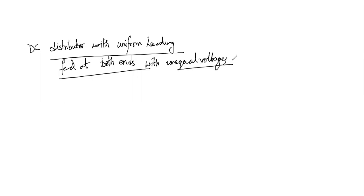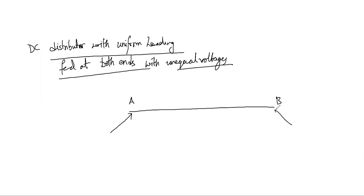So let the DC distributor be fed from the feeding points A and B with different voltages — unlike what we analyzed in the previous one. I will be having two different sets of voltages, VA and VB, where VA is not equal to VB. Both voltages are at unequal levels.